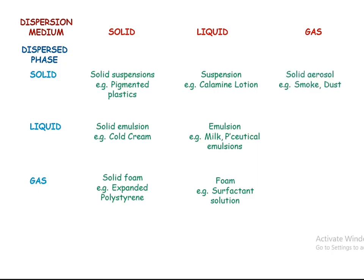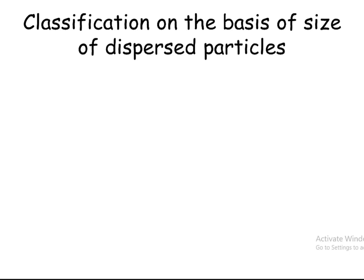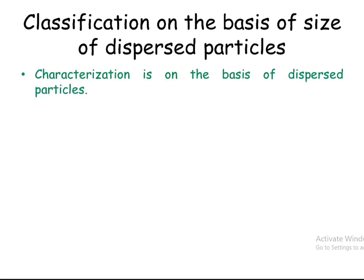When the dispersion medium is gas and the dispersed phase is solid, solid aerosols are formed — for example, smoke and dust, also called dry aerosols. When the dispersion medium is gas and the dispersed phase is liquid, liquid aerosols are formed — for example, fog, mist, or perfumes. When both the dispersion medium and dispersed phase are gases, no formulation is formed.